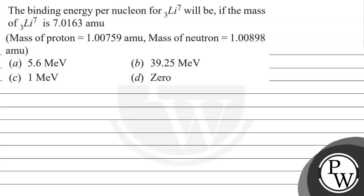Hello, let's read this question. The question says that the binding energy per nucleon for lithium-7 will be if the mass of lithium-7 is 7.0163 atomic mass units.